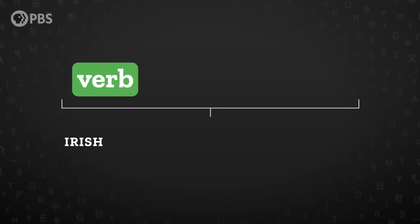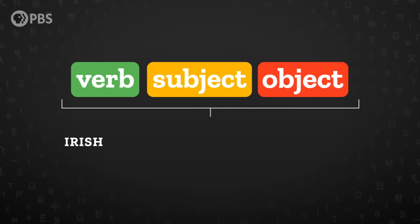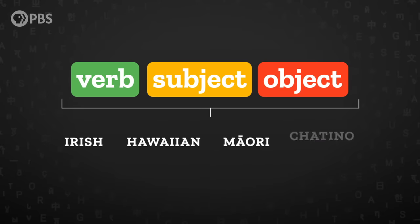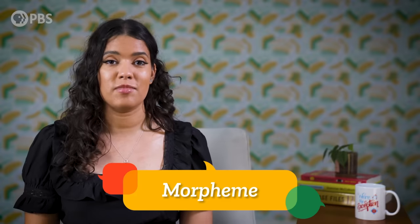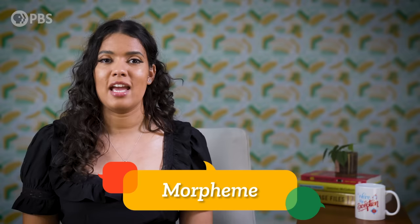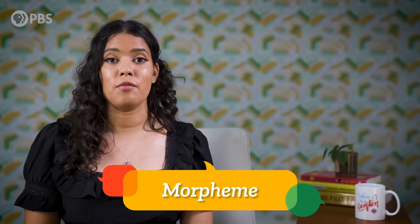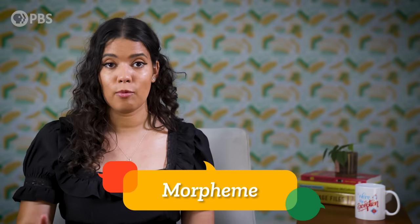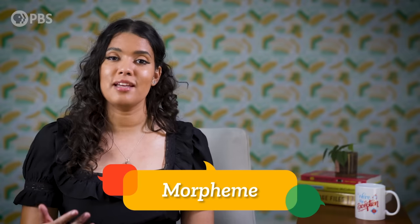And in Irish, the typical order is verb, subject, object. This order is rare, but it's also found in Hawaiian, Maori, and Chitino, another language of Mexico. A second way of expressing relationships between words is by adding a morpheme — the smallest unit of meaning.